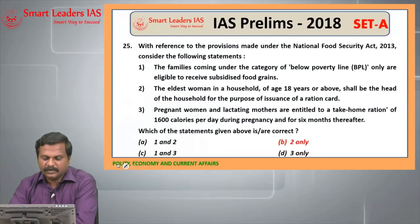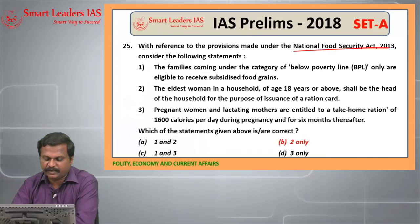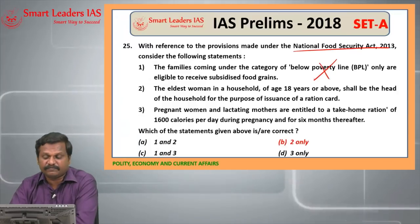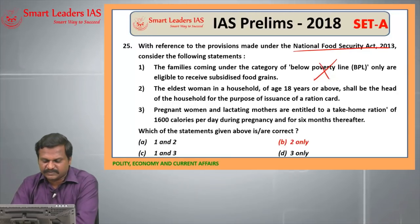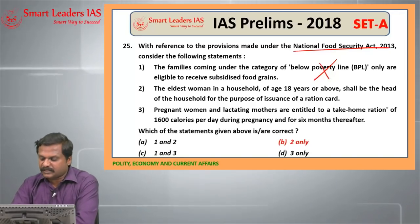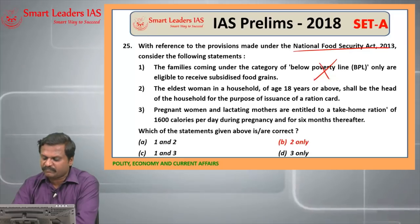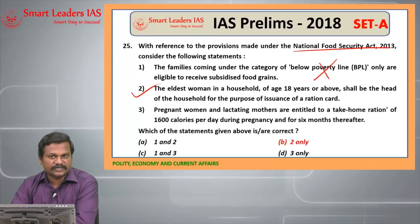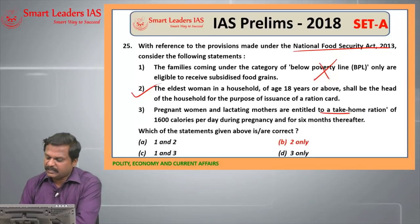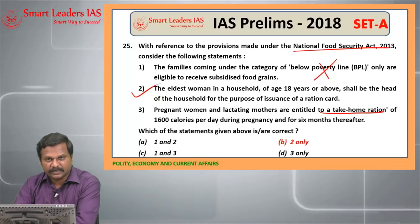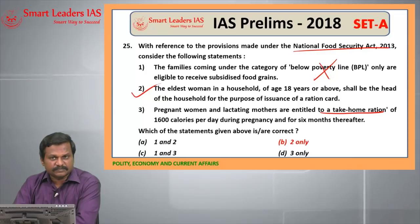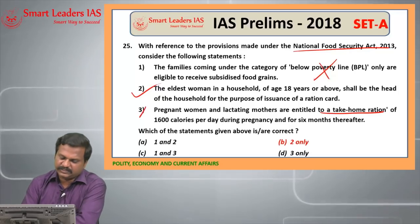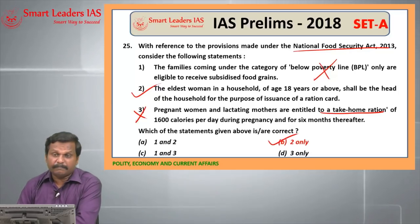25th question: National Food Security Act 2013. Families coming under the BPL category are eligible — not BPL category specifically; the beneficiaries will be identified according to the socio-economic caste census by the respective state government. The eldest woman in the household aged 18 years or above shall be the head of the household for the purpose of issuance of a ration card — this is a right statement. Pregnant mothers and lactating mothers will receive 6000 rupees. Only children aged 6 months to 14 years will get a take-home ration, not pregnant women and lactating mothers — so this is a wrong statement. The answer is B, 2 only.